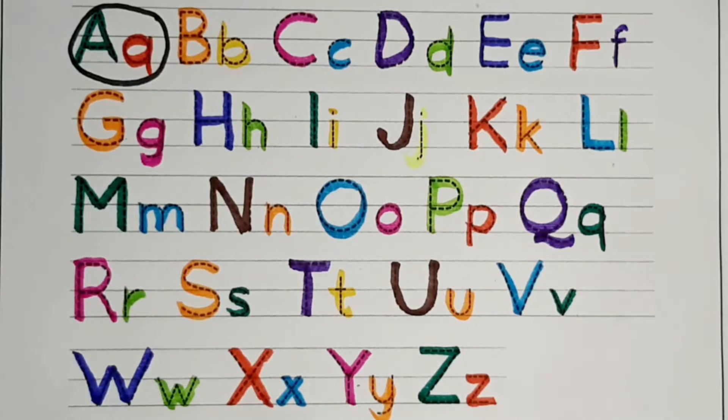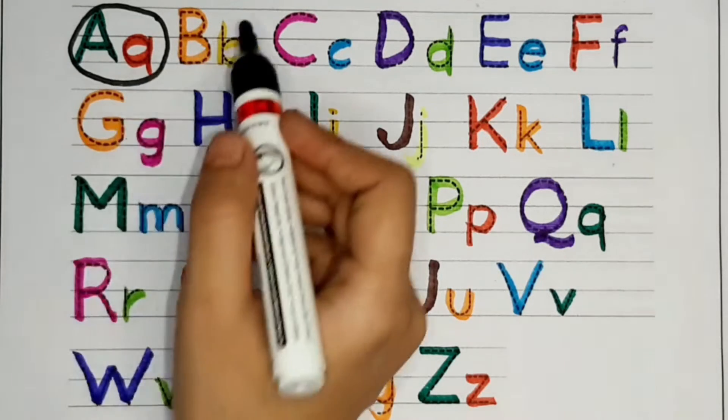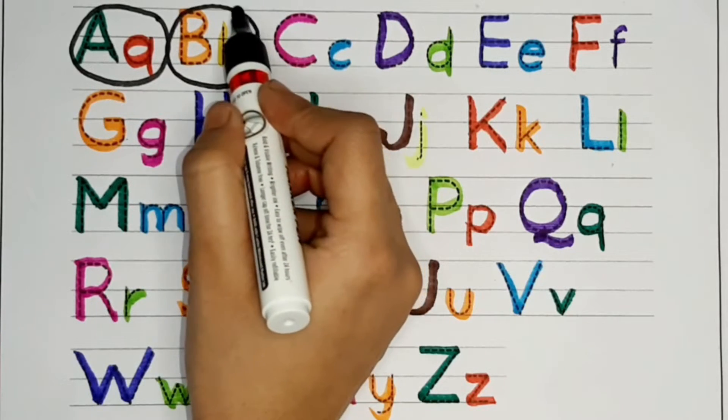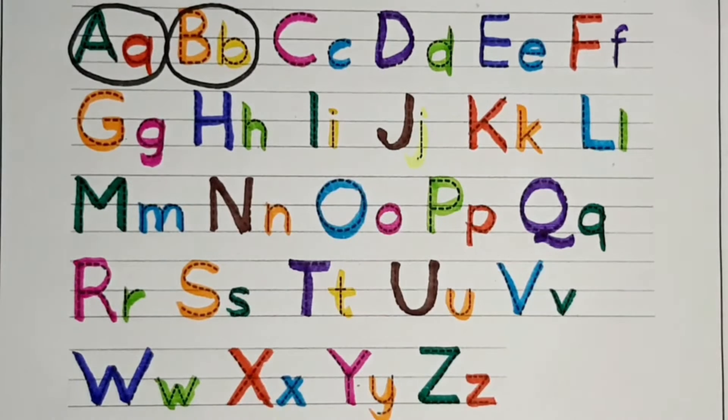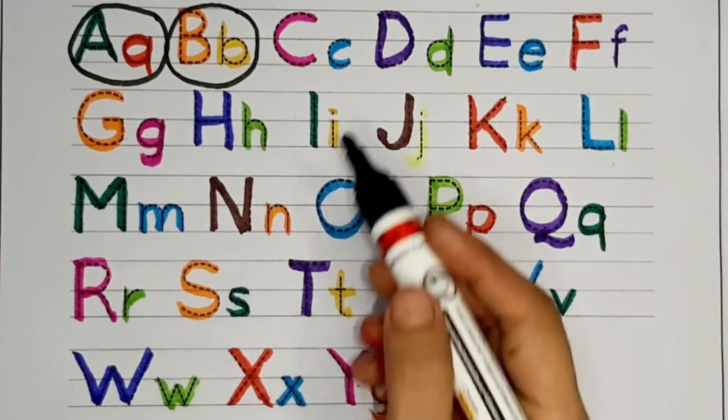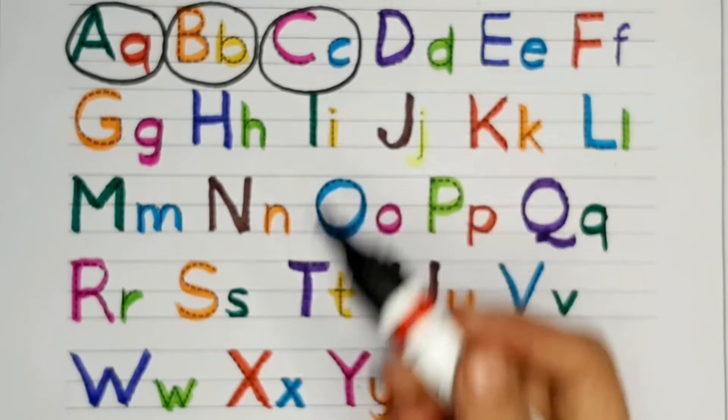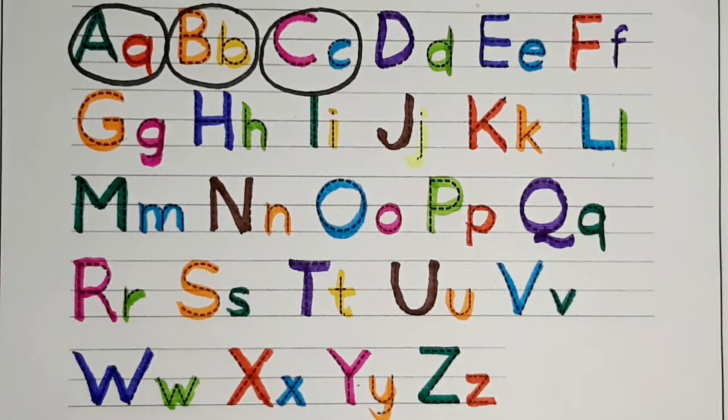A. A for apple, A for aeroplane. B. B for ball, B for balloon. C. C for car, C for cat.